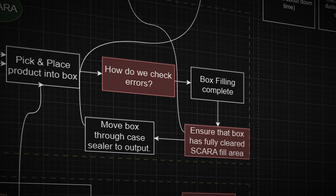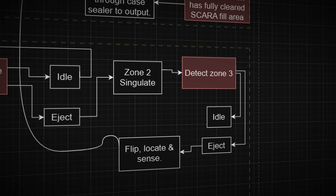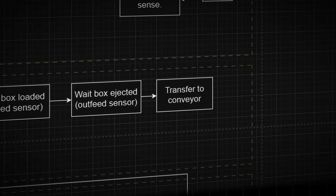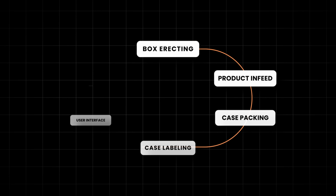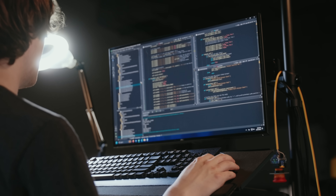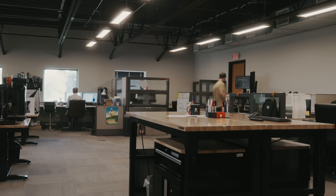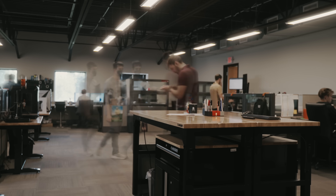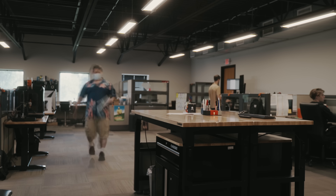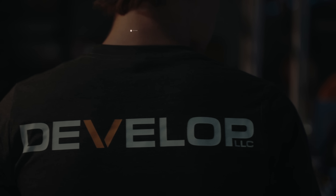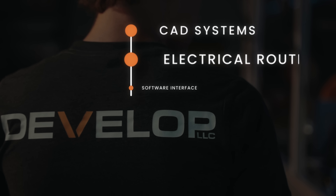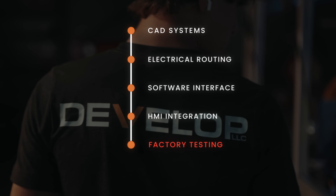This team builds a flow diagram of the entire machine process from beginning to end. The diagram starts at the high-level functions, and by the time it is complete, we know how the machine will function mechanically and how the software is going to communicate to those systems. With every incremental step accounted for, our team members divide and conquer to create the CAD systems, electrical routing, and software interface.